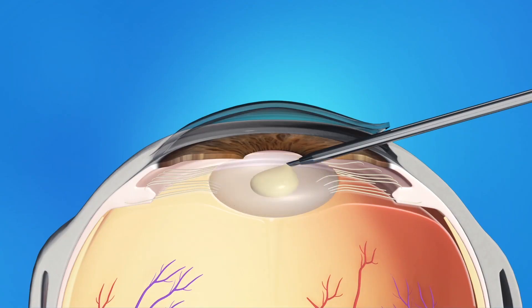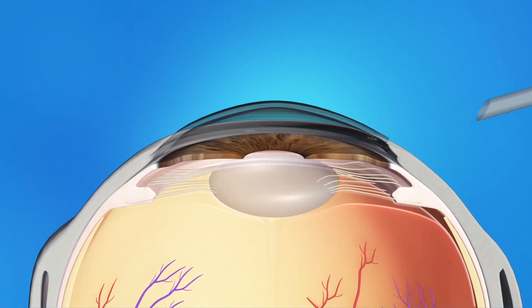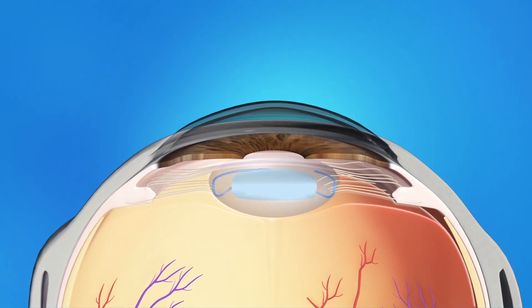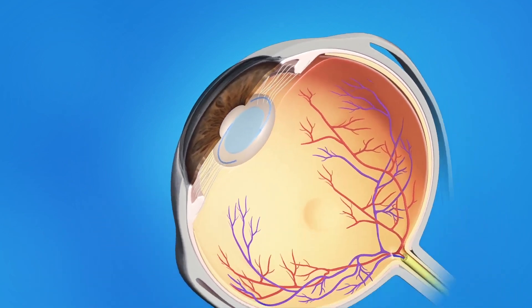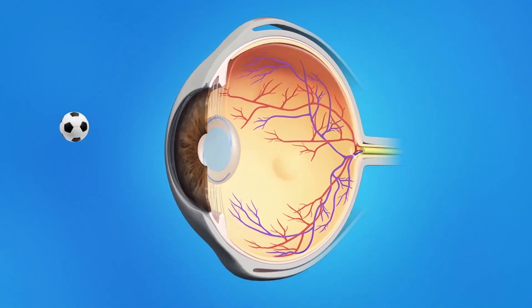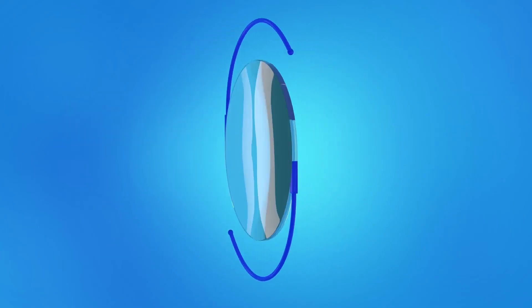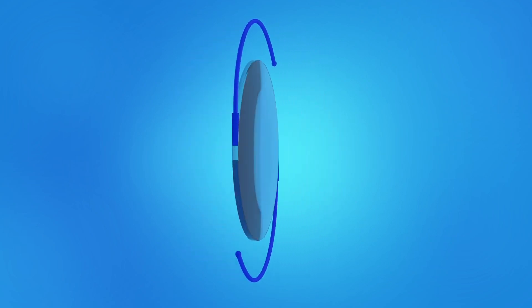The gold standard for cataract surgery today is to remove the cataractous lens and replace it with the standard monofocal lens. After this lens is placed into the eye, the patient will no longer have to use spectacles for distance vision. But for the intermediate range and near vision — where all your reading, writing, and mobile work is done — spectacle correction will still be needed.